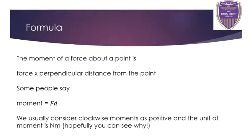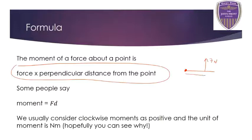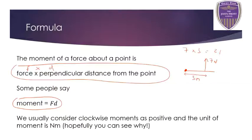The moment of a force about a point - here's the formula. To work it out, you just do the force multiplied by the perpendicular distance from the point. So if you have a rod and a point here, and you apply an upward force of 7 newtons, the moment of this force about that point would be 7 times the distance. If it's 3 meters away, the moment would be 7 times 3, which is 21. So in short, moment equals Fd, where F is the force and D is that perpendicular distance - the straight line distance.